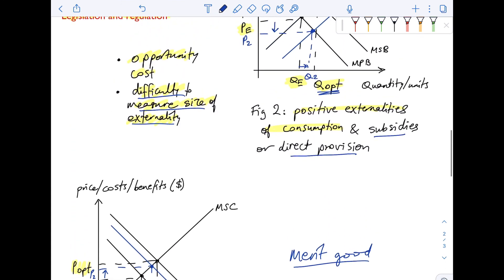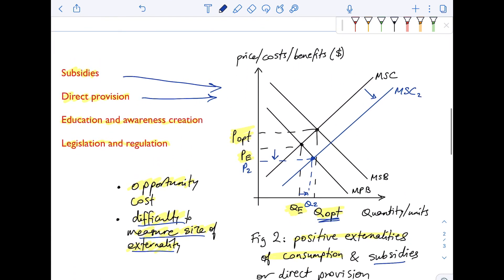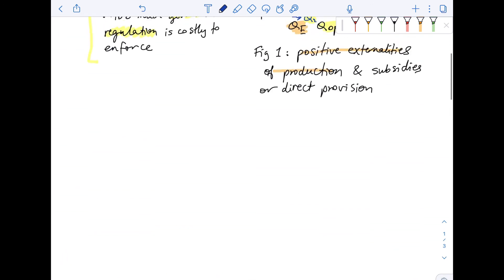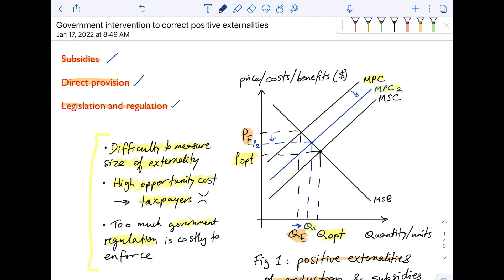So here's a review of basically the different government intervention strategies to deal with positive externalities of production, as well as positive externalities of consumption.